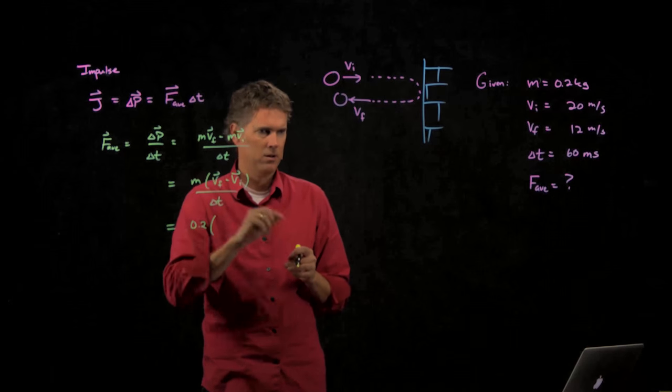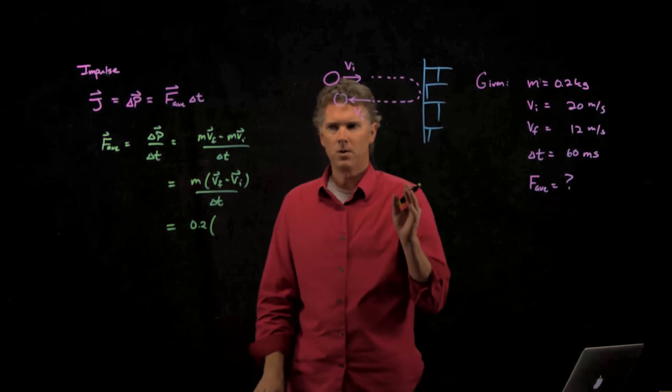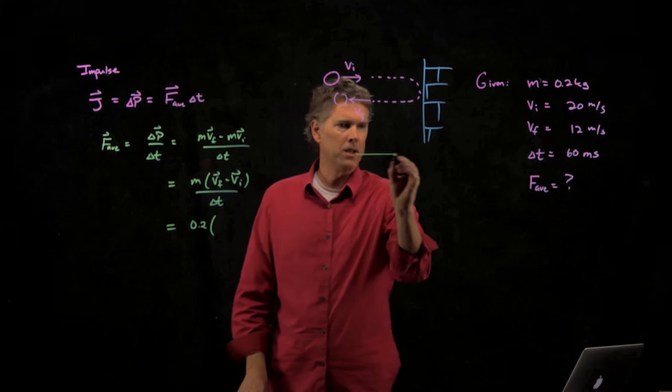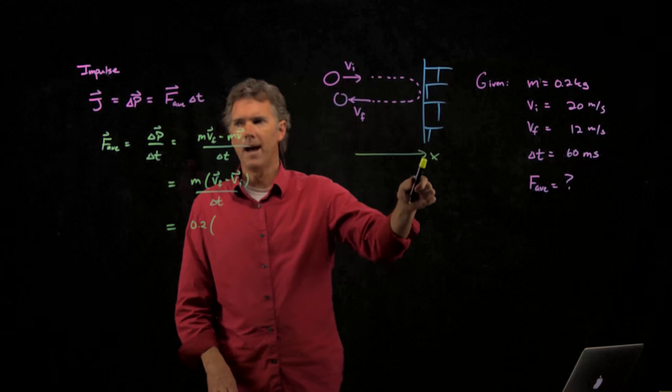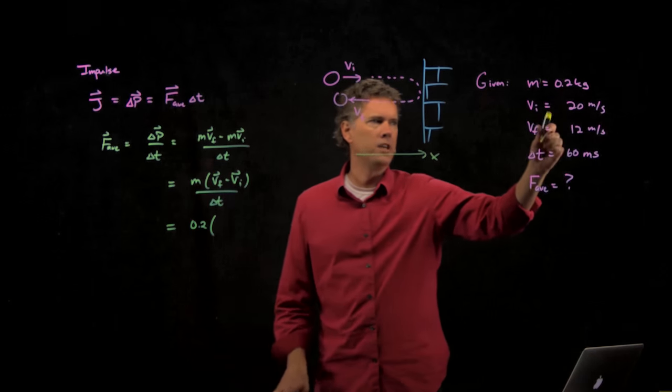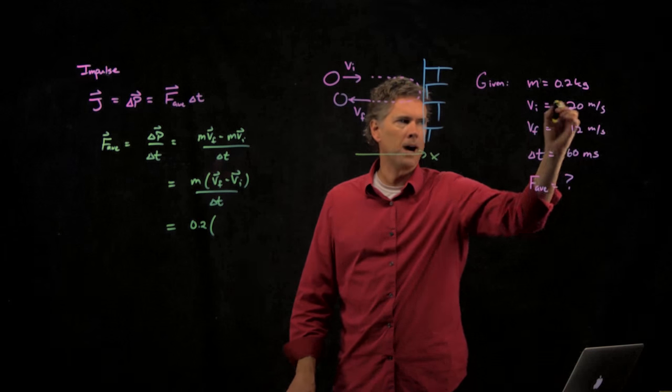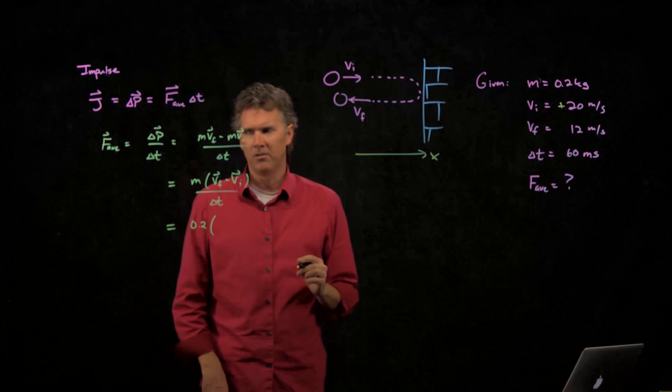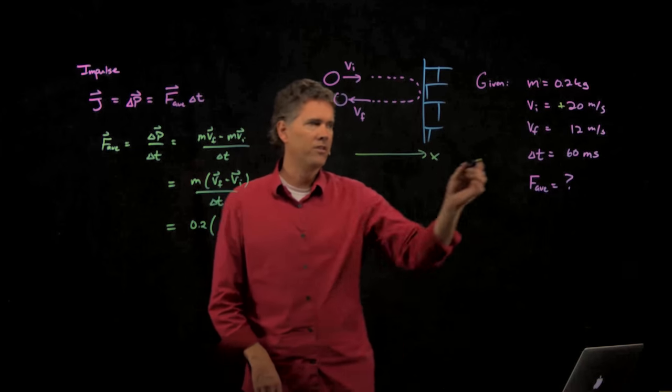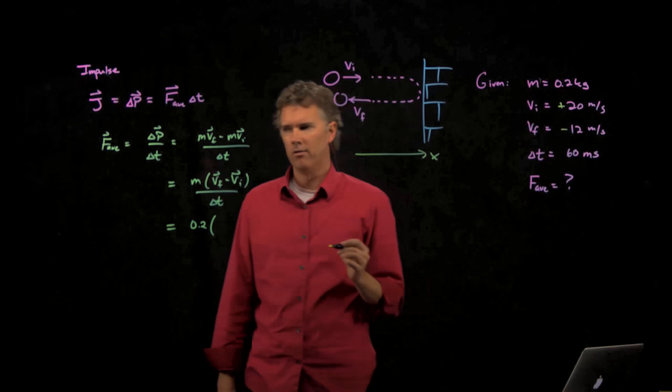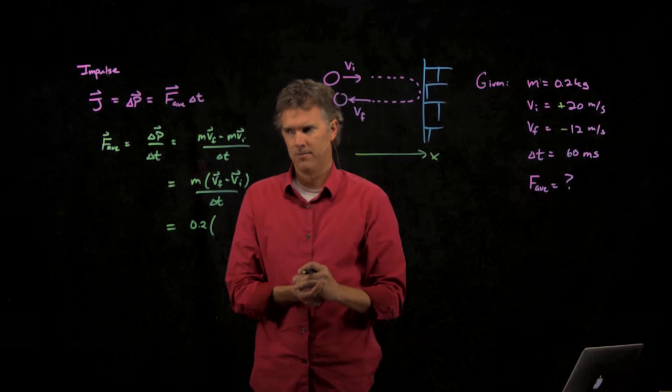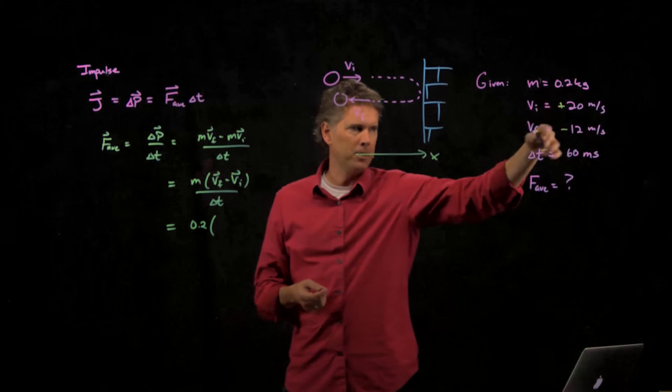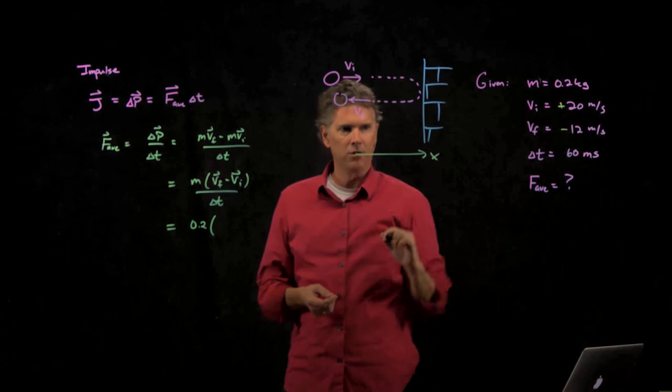Remember, this VF is a vector—it has a sign to it. So we need to figure out what direction is positive. Why don't we just make this direction positive? And so if that direction is positive, VI is certainly positive, 20 meters per second. But what's VF? Negative 12 meters per second, because it's going in the negative direction. And so this is where you have to be a little bit careful when you write down those givens.